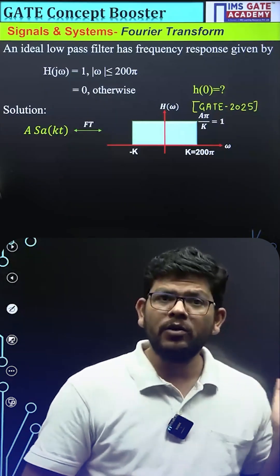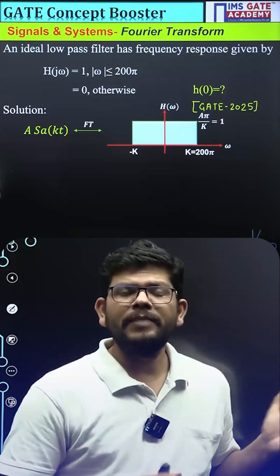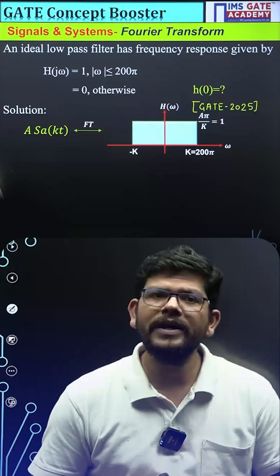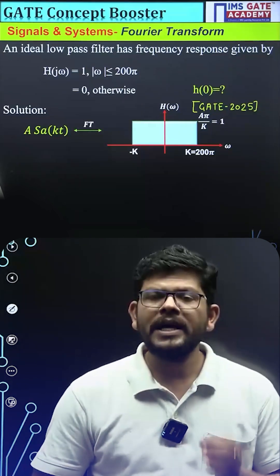In this way, if now we know the Fourier transform of this particular signal, we have A sinc(kt) and it is a rectangular wave in case of Fourier domain. Now, if we apply one property which is area under frequency domain.